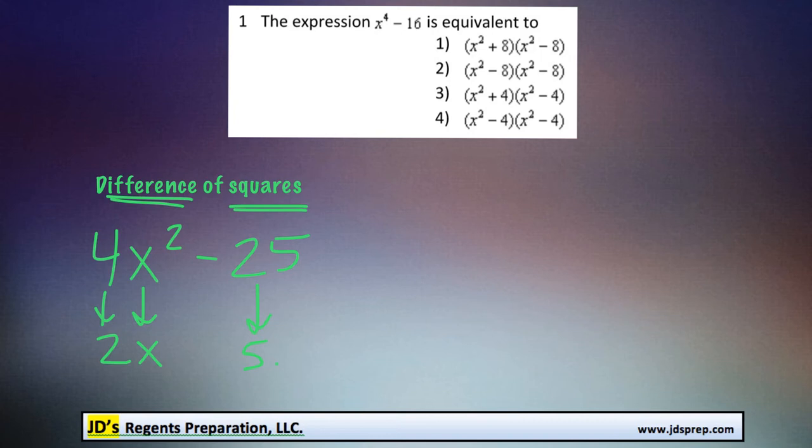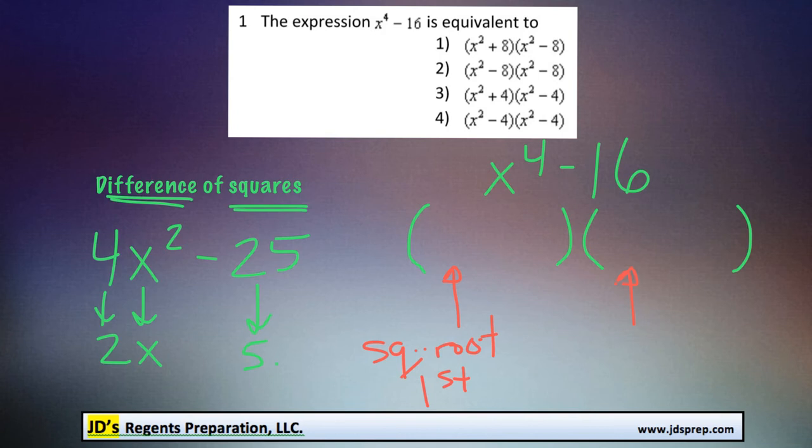Now in this example, we're dealing with x to the power of 4 minus 16. Now when I'm factoring a difference of squares, I like to start by drawing my two sets of brackets. And how it's going to work is that the term that we put in the beginning of each set of brackets is the square root of the first term.